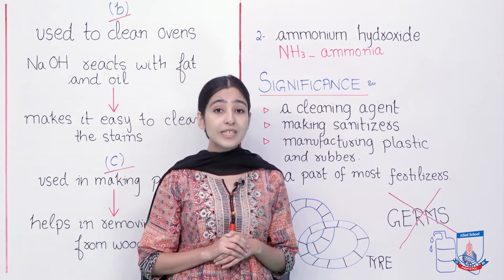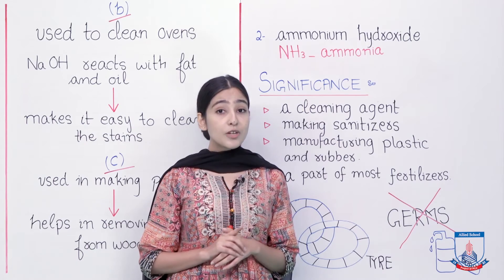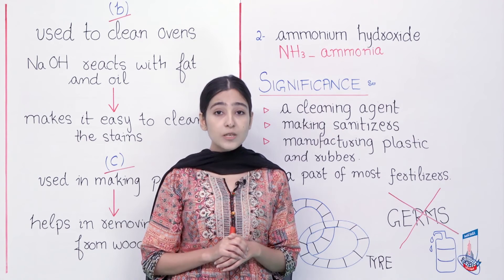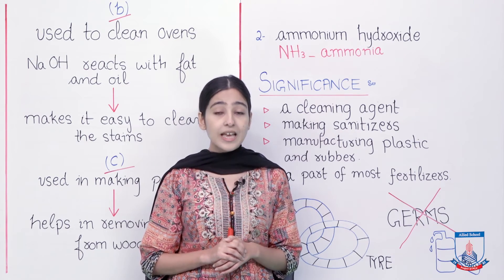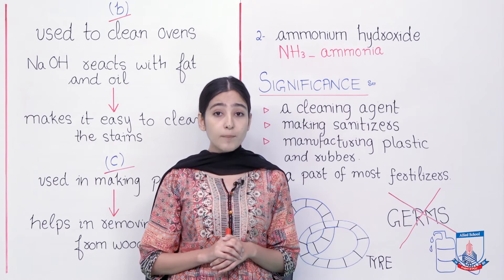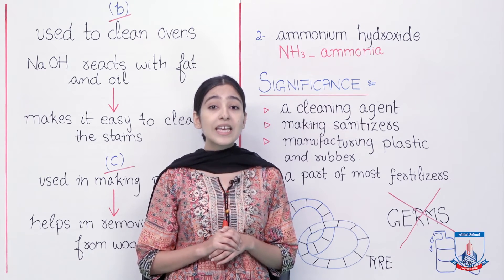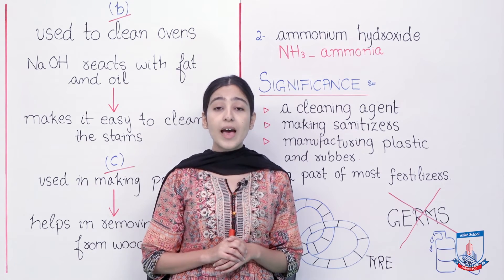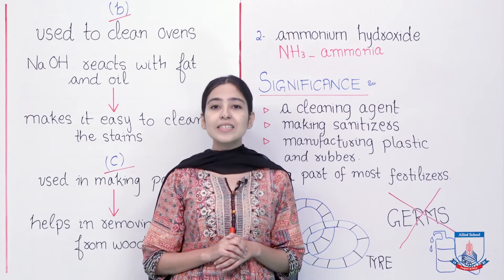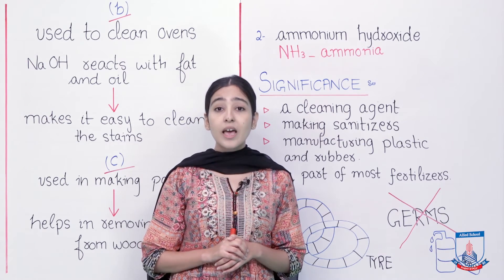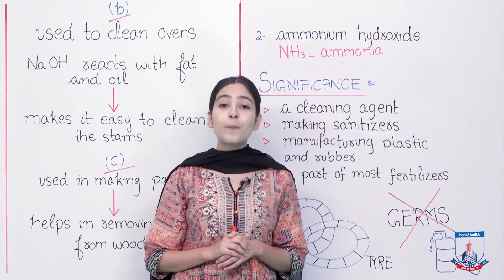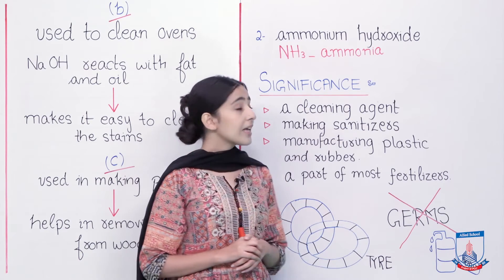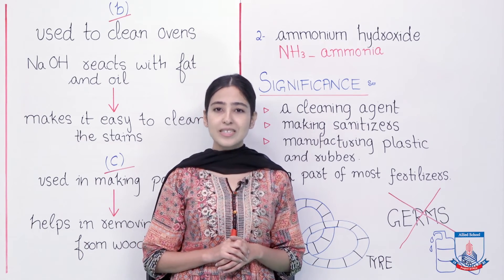Ammonia itself does not kill microorganisms, but it is a significant part of QACs — the quaternary ammonium compounds. These compounds are disinfectants and can kill microorganisms including mold, bacteria, and viruses. Ammonia is also used as a fertilizer; it may not increase the nutrient content of soil, but it can protect plants from most microorganisms.